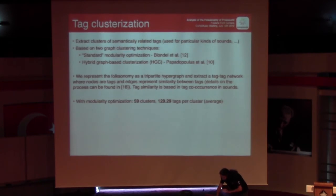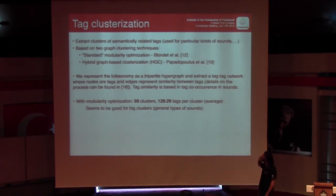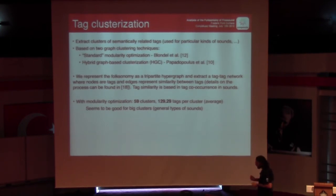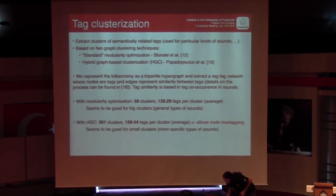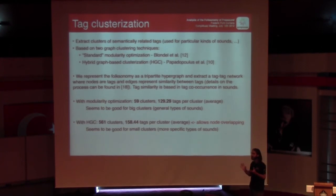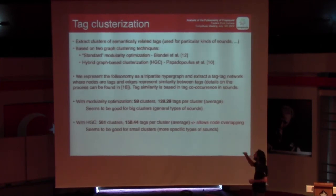With the modularity technique, we got almost 60 clusters with 120 tags per cluster on average. We observed that the clusters differentiate between general types of sounds — for example, tags referring to music and tags referring to field recordings. Using the overlapping method, there is a bigger number of communities. The big communities are more or less the same, but the small communities that are created are groups of more specifically related tags, which are much more specific than what we could observe with the first method.